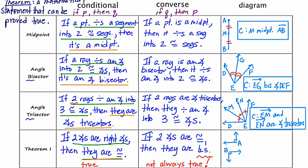In the illustration, we have a right angle called A and a right angle called B. According to the theorem — if two angles are right angles, then they are congruent — the conclusion is that angle A is congruent to angle B.